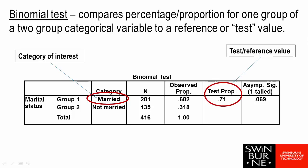The test proportion is the reference value that we are testing against. So what will be happening in this test is we will be testing to see whether or not the proportion of married people is equal to 0.71. Our observed proportion, so our sample proportion, is 0.682.